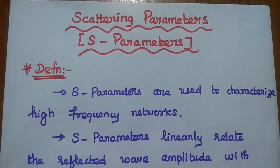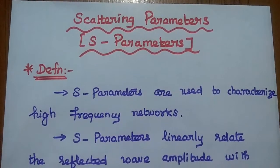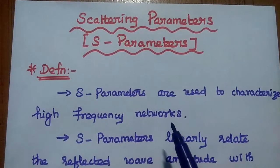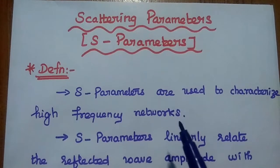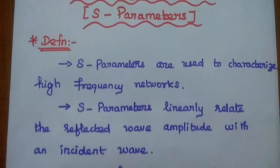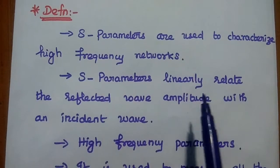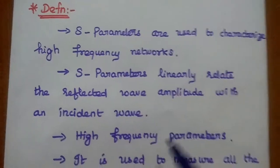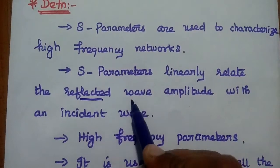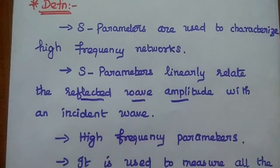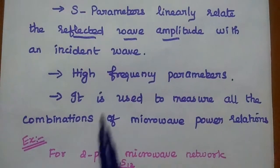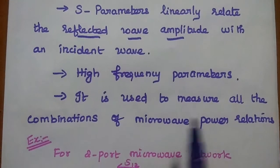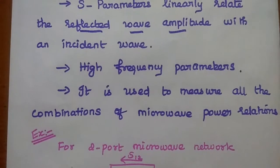Scattering parameters are mainly used to characterize high frequency networks. In high frequency networks, due to the wide range of frequency, there is reflection. S-parameters are used to linearly relate the reflected wave amplitude with an incident wave. That's why we use S-parameters in high frequency networks. They are also called high frequency parameters and are used to measure all combinations of microwave power relations.